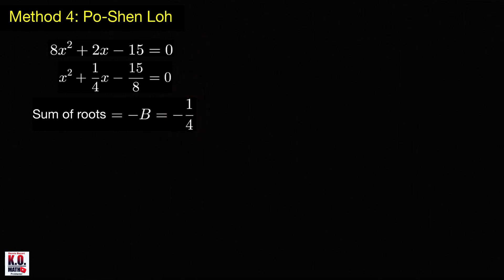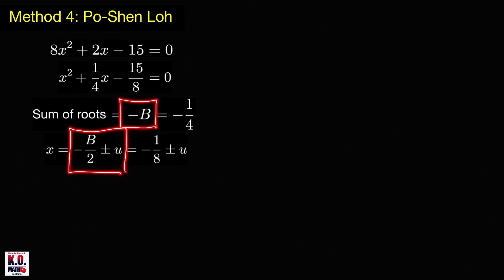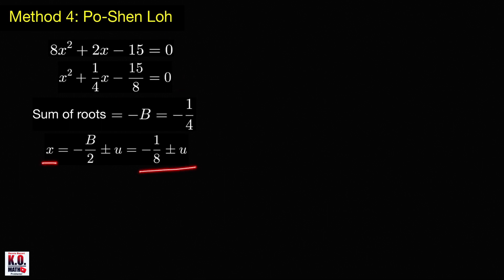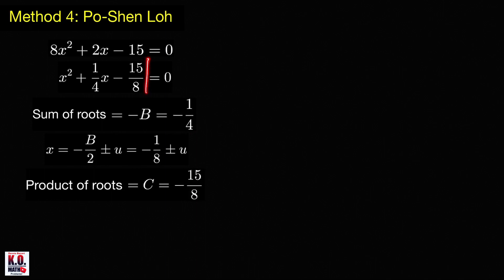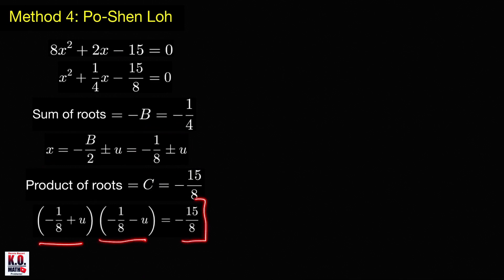The roots can be written as negative b over 2 plus or minus some number u. When we add these two x values, the plus and minus u cancel out, giving negative b/2 plus negative b/2 equal to negative b. Since b equals 1/4, we write the roots as negative 1/8 plus or minus u. Another property: the product of roots equals the constant term, which is negative 15/8 — always true when the coefficient of x² is 1.